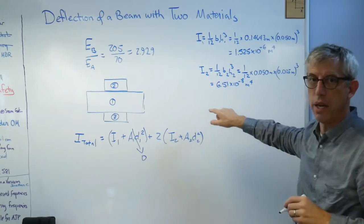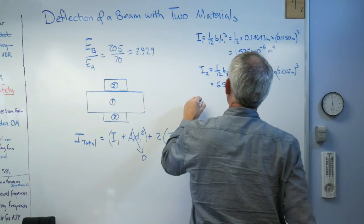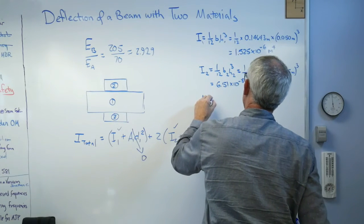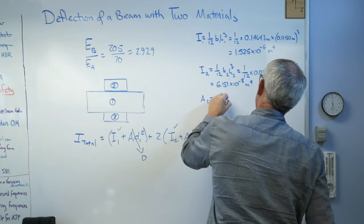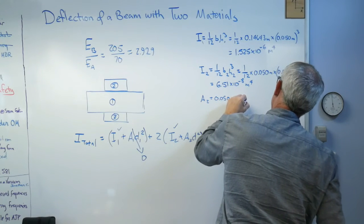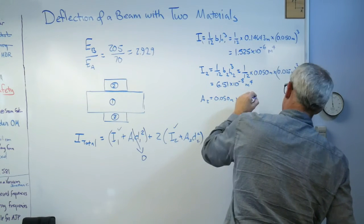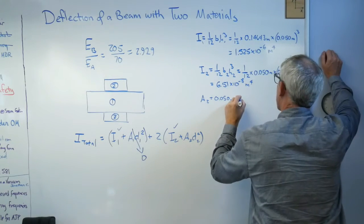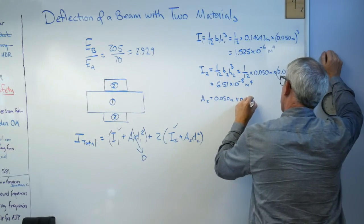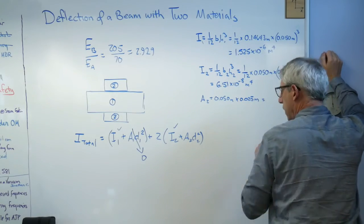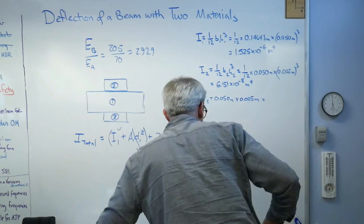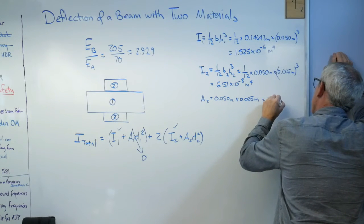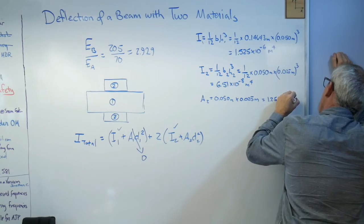Area two, I need area two. 0.050 meters times 0.025 meters. And that's going to be 1.25 times 10 to the minus 3.